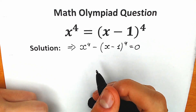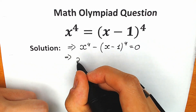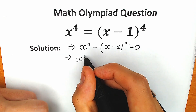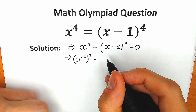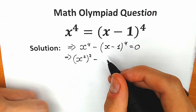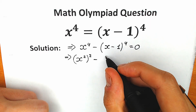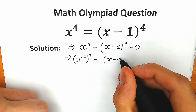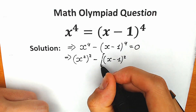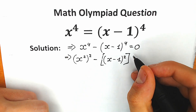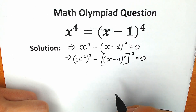Right now, an extremely important part. Instead of x to the fourth, I'm going to write x squared to the power 2. We can easily do this. And the same thing with the other side — I'm going to write x minus 1 to the power 2, and raise all of this to the power 2, equal to 0.